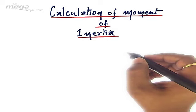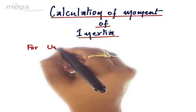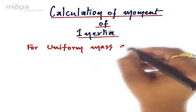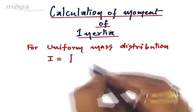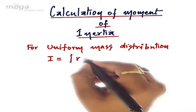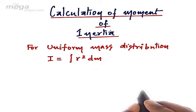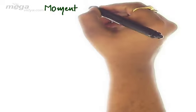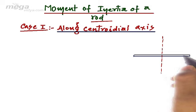Calculate the moment of inertia for uniform mass distribution. As we have already studied, for uniform mass distribution, the moment of inertia is equal to the integration of R squared dm, where integration is taken along specified limits. We will find the moment of inertia of a rod along the centroidal axis.